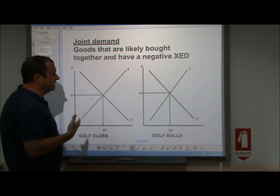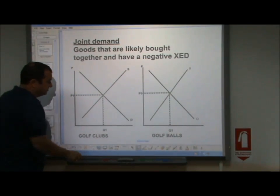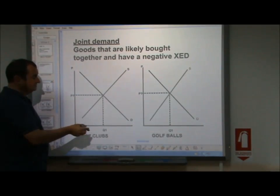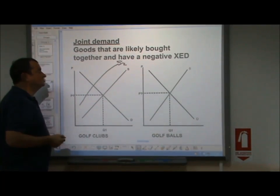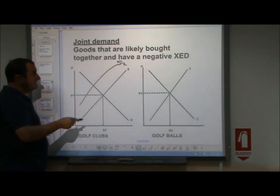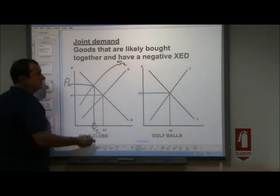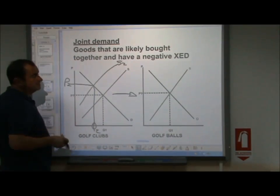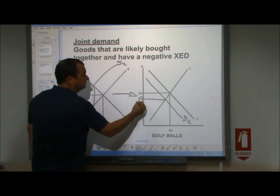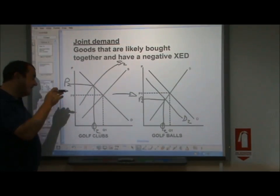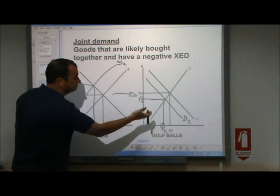What can we expect to see if these goods are in joint demand? Let's imagine that something raises the price of golf clubs — maybe some sort of rise in the cost of production drives the supply inwards and raises the price of golf clubs. That reduces the quantity of golf clubs bought, and it's likely to have an effect in the market for golf balls. It's likely to reduce the demand for golf balls, which in itself lowers the price and lowers the quantity supplied. So the impact of higher costs of production in the golf club market led to a fall in demand in the golf ball market.